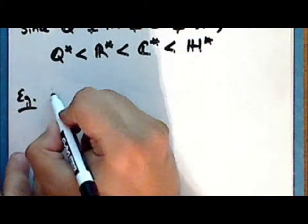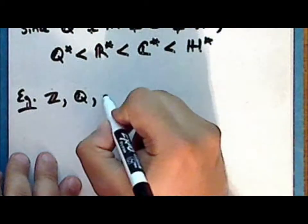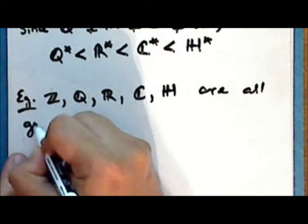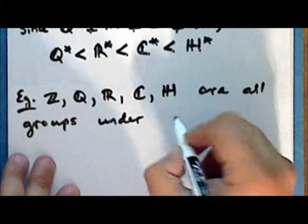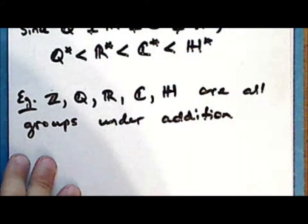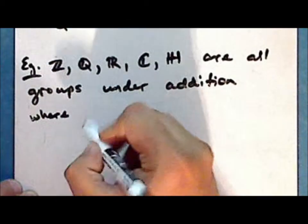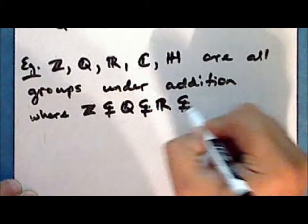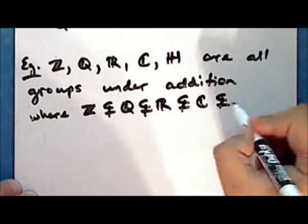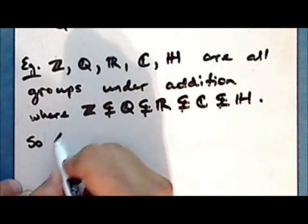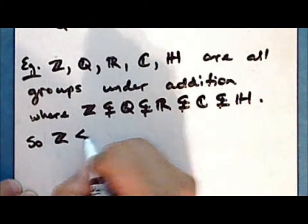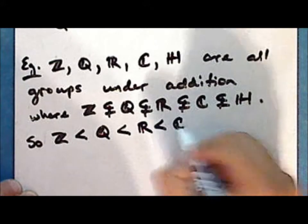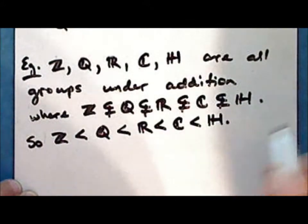Next example: the integers, the rationals, the reals, the complex numbers, and the quaternions are all groups under addition. The integers are a proper subset of the rationals, which are a proper subset of the reals, which are a proper subset of the complex numbers, which in turn are a proper subset of the quaternions. So the integers form a proper subgroup of the rationals, which is a proper subgroup of the reals, which is a proper subgroup of the complex numbers, which is a proper subgroup of the quaternions, all under addition.